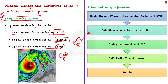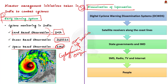Here, genesis means origin, so cyclogenesis is nothing but the origin of a cyclone. These organizations work in tandem to ensure efficient monitoring of cyclones. Remember, not just tracking of the cyclones — the information must also be communicated to the people and government officials to ensure effective preparedness.